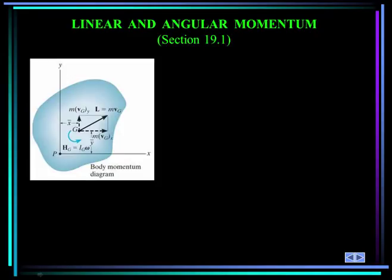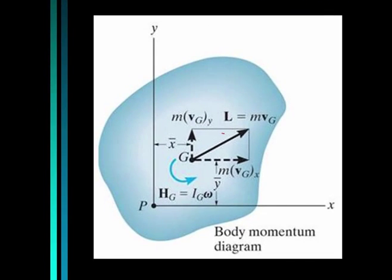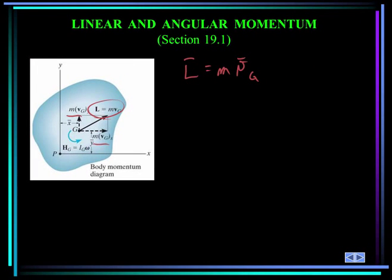Let's define linear and angular momentum for a rigid body. The linear momentum, designated by L, is equal to the mass times the velocity of the mass center. You can break up the linear momentum into X and Y components. The angular momentum is denoted by H, and that's equal to the mass moment of inertia about the mass center times omega. The direction of the angular momentum is perpendicular to the plane of rotation — in our case, coming out of the board.